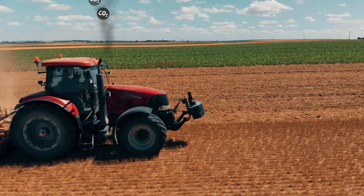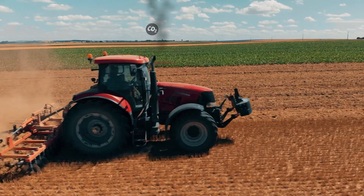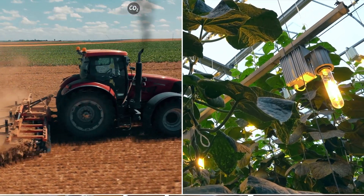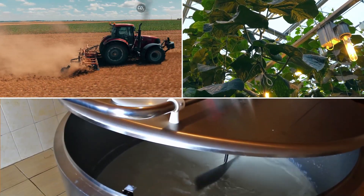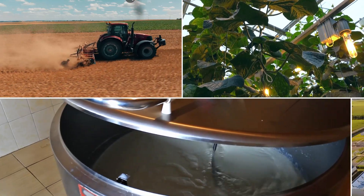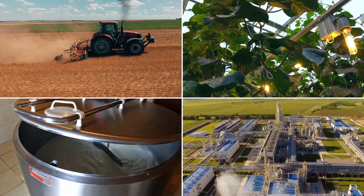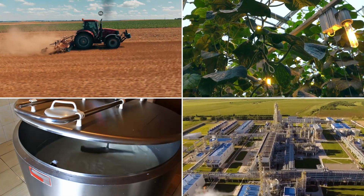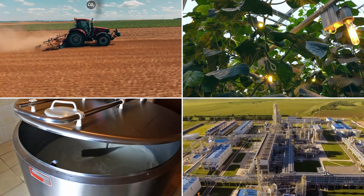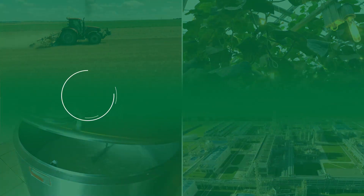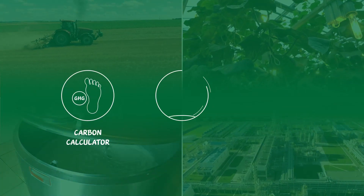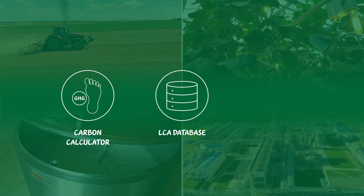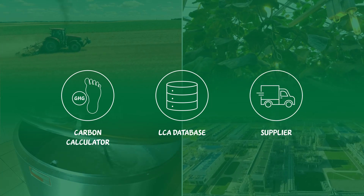Any other emissions, such as fossil fuel consumption, electricity, energy for milk cooling, and emissions from upstream processes such as feed and fertilizer production, can be either obtained from the carbon calculator, from LCA life cycle databases, or may be received directly from the supplier.